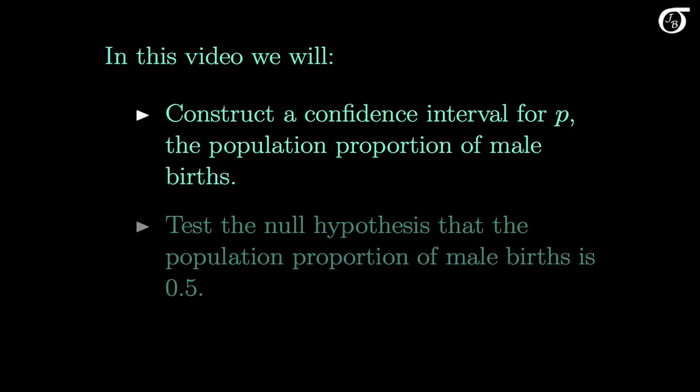In this video we will construct a confidence interval for P, the population proportion of male births to non-smoking parents in Liverpool, and we will test the null hypothesis that the population proportion of male births is 0.5. We might naively think that the true proportion should be equal to exactly 0.5, and want to test that notion. The sample proportion of 0.5322 is a little bigger than 0.5, and we're going to test to see whether that sample data gives strong evidence that the true proportion is in fact different from 0.5.